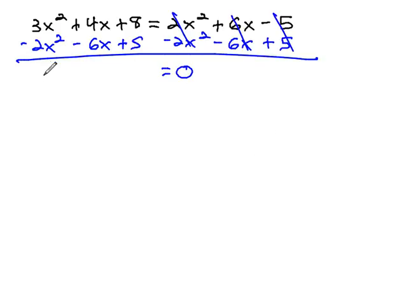On the left side, 3x squared minus 2x squared is 1x squared, 4x minus 6x is negative 2x, and 8 plus 5 is 13.